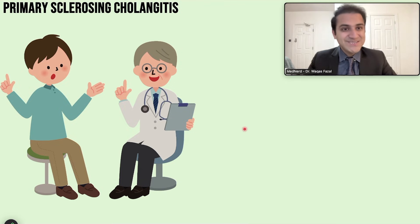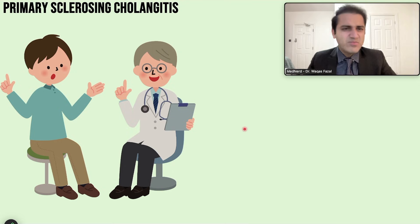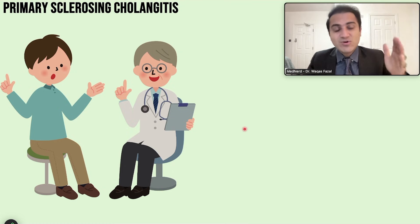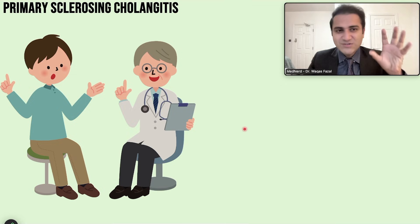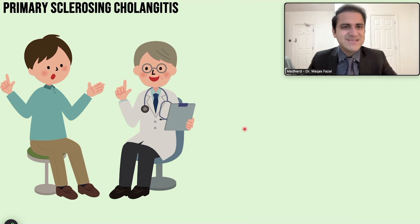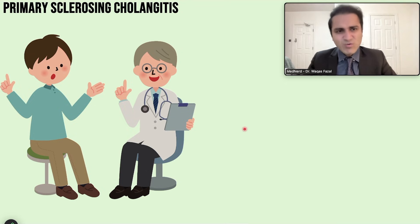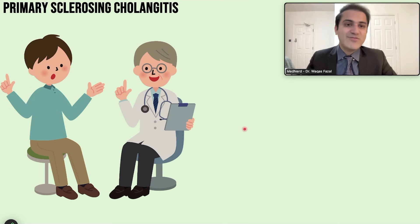Liver function tests show that ALT and AST are only mildly elevated, but ALP and gamma-glutamyl transferase are highly elevated — an obstructive cholestatic pattern. Virology is negative. This is a classical presentation of primary sclerosing cholangitis.